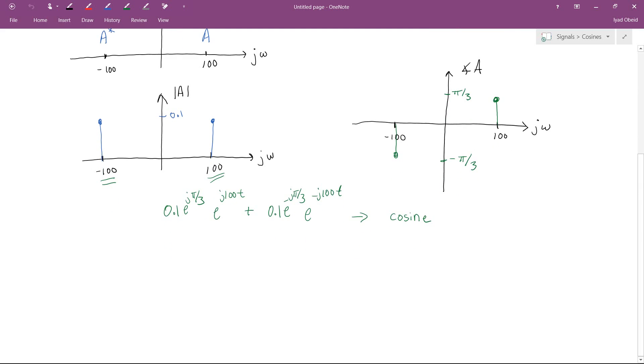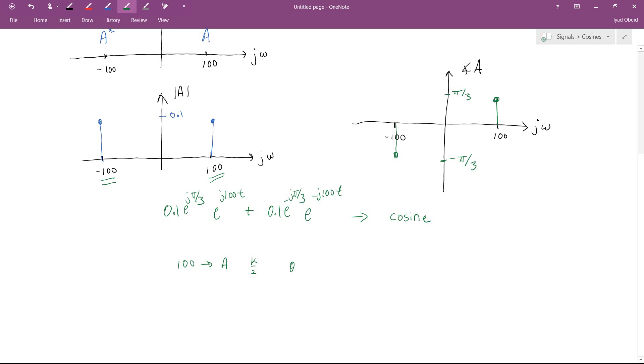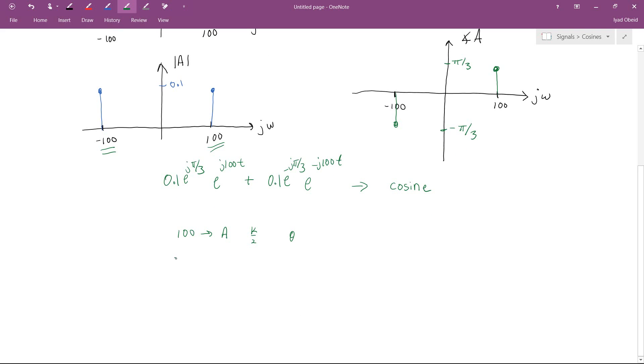So just as a challenge, actually before we get to the challenge, I'm going to point out something else that's interesting. You know that if you have energy at 100, that energy is A, which has some magnitude and some phase. Now, because everything is built out of cosines, if you have energy at 100, you're guaranteed to also have energy at minus 100. And that energy will be at a conjugate, which will have magnitude of k over 2 and phase angle of minus theta. So what this means is that from a plotting perspective, the negative frequencies are sort of a little bit redundant.